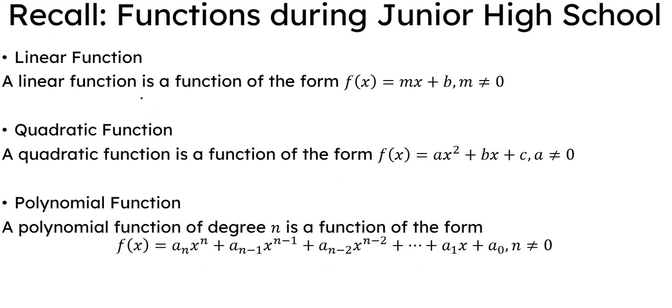If we recall, we have studied in junior high school the following functions. During grade 8, we studied linear functions and it's defined as a function of the form f(x) = mx + b, where m ≠ 0. In some books, they have it f(x) = ax + b. So we replace a with m because we're more familiar with m as the slope of our line. If you remember your slope intercept form as y = mx + b, that is already actually the equation of a line in its function form.